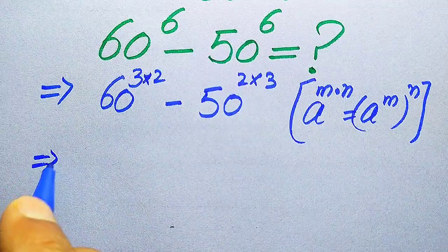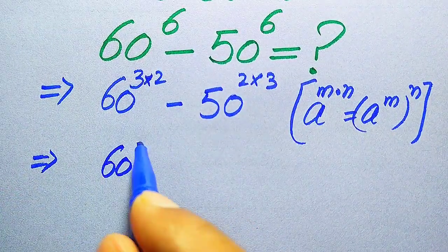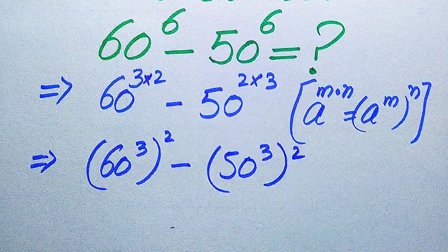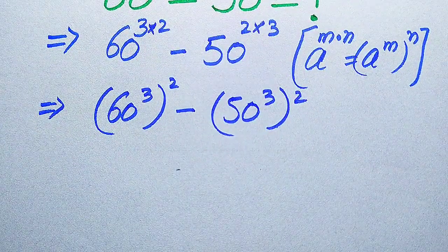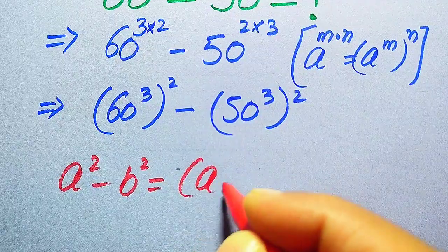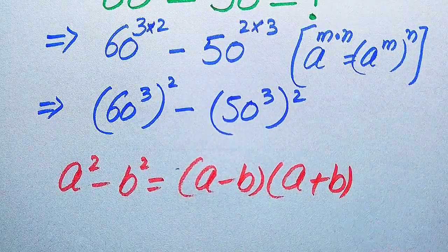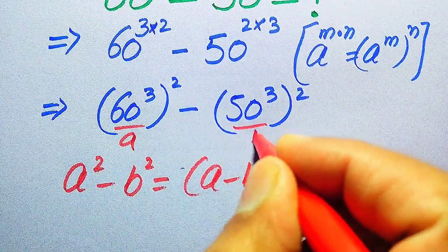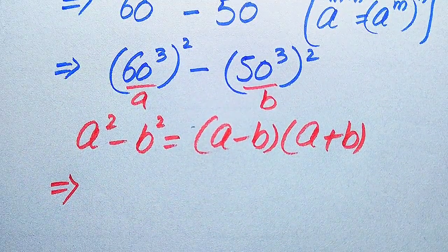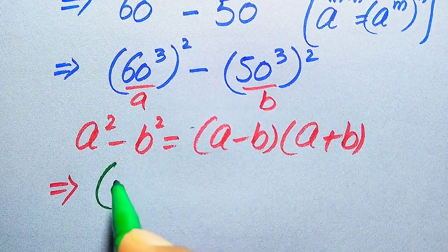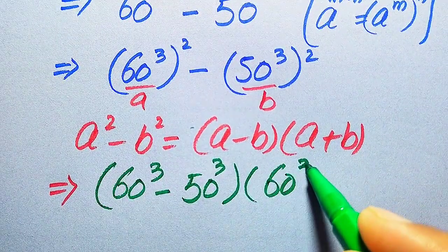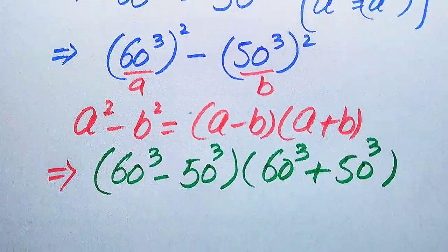According to this rule of exponents, we move the 3 inside the term. It will be written as 60 cubed, whole squared, minus 50 cubed, whole squared. In the next step, we use the algebraic formula: a squared minus b squared equals a minus b times a plus b. The base of the first term is our a and the base of the second term is our b, so we write the expression as 60 cubed minus 50 cubed, times 60 cubed plus 50 cubed.